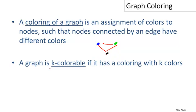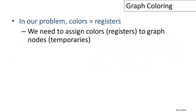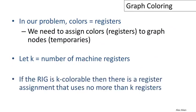A graph is K-colorable if it has a coloring that uses K or fewer colors. In our problem, the colors correspond to registers. We want to assign colors or registers to the graph nodes. We're going to let K, the maximum number of colors we're allowed to use, be the number of machine registers.